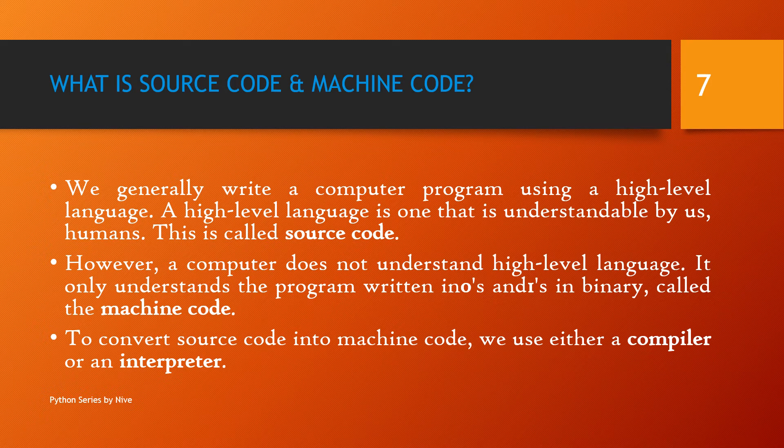We generally write programs using a high-level language that is understandable by humans — that is called source code. The computer does not understand high-level language, so it understands everything in zeros and ones, called binary, which is machine code. To convert source code into machine code, we need either a compiler or an interpreter.